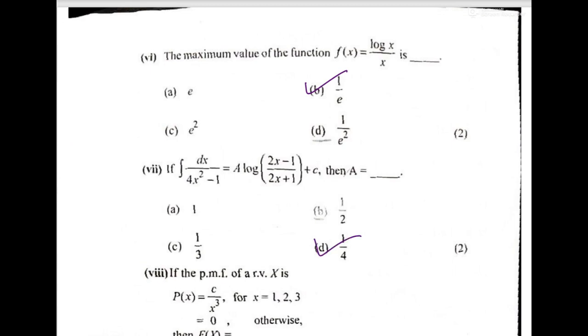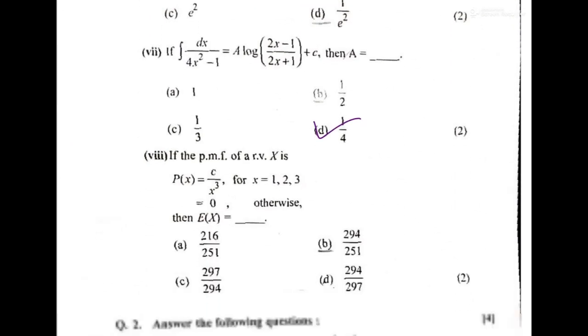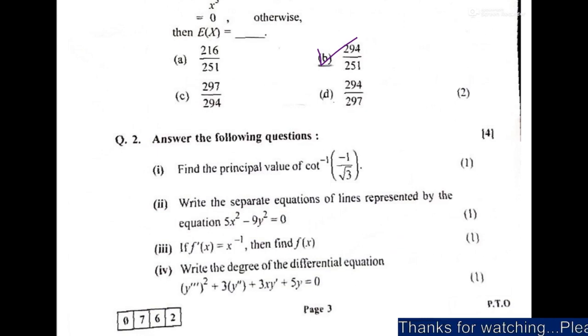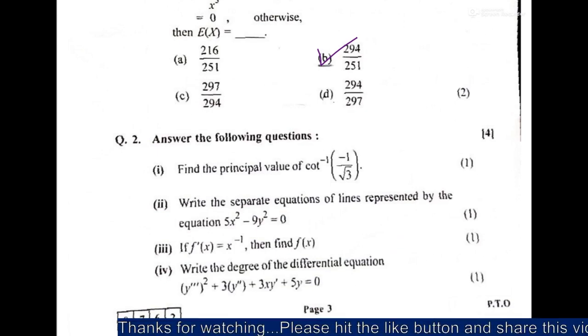Then the fifth answer is again D. Then move forward. Sixth answer is B. Seventh answer is D. Then eighth answer is B.